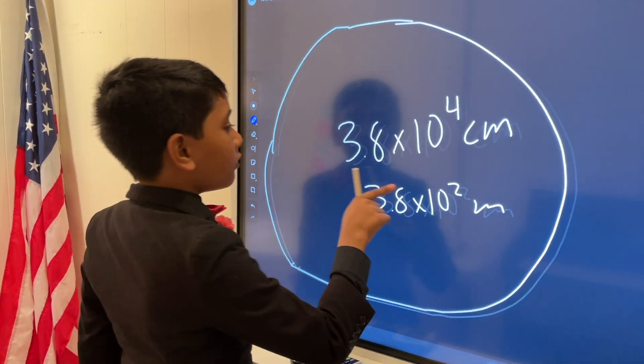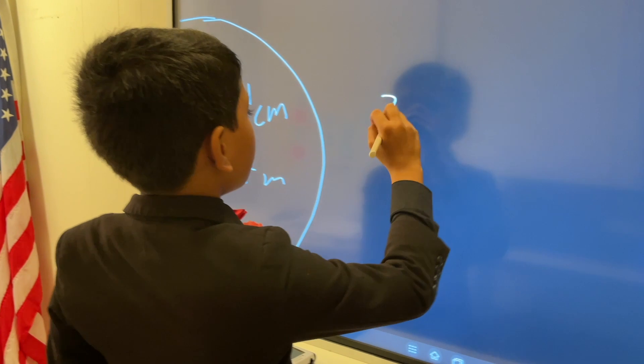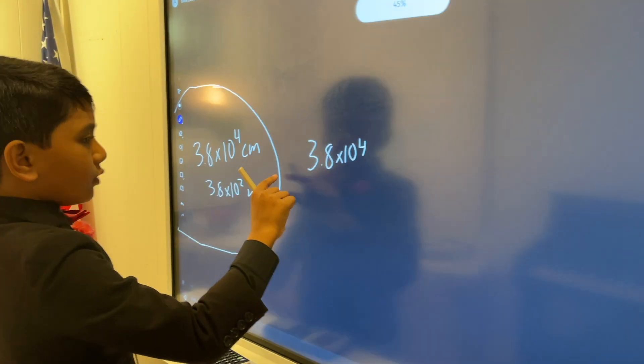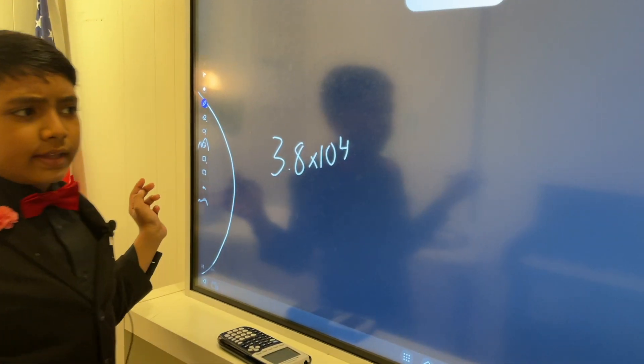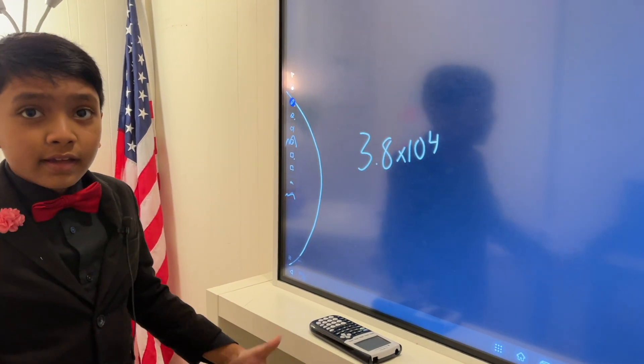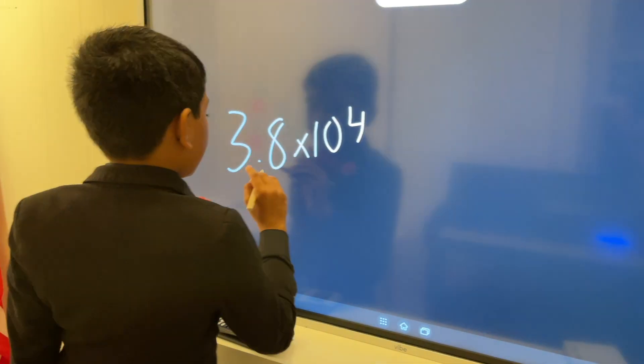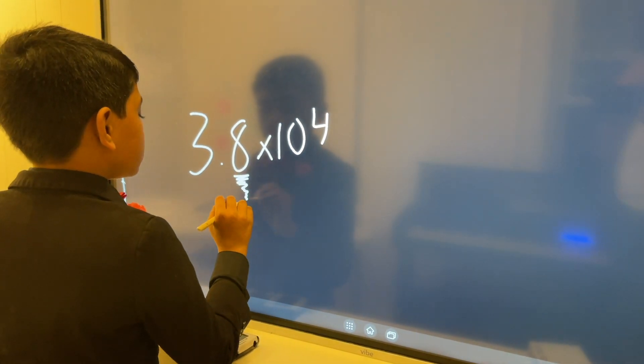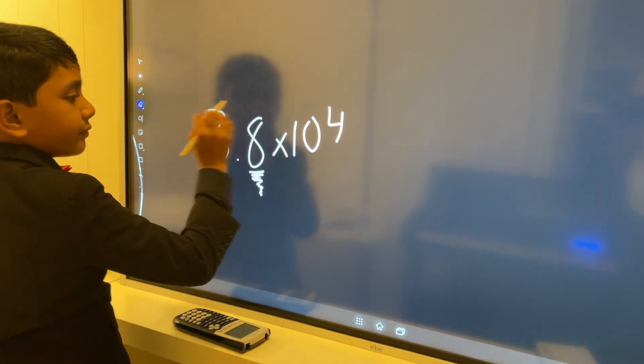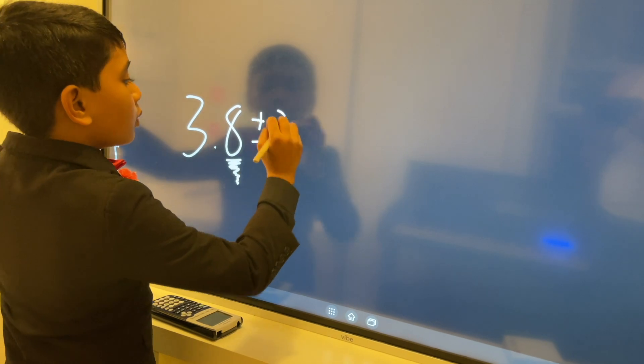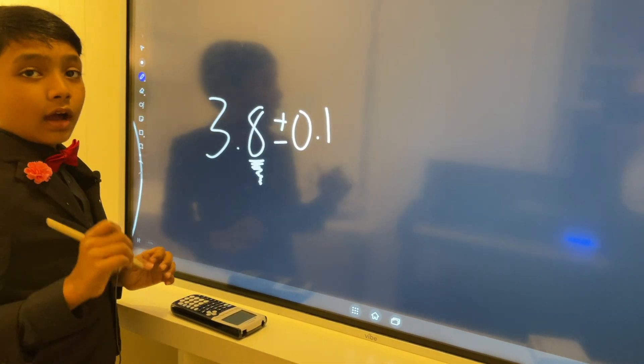So now, you take this, and you will have an uncertainty here. What is the uncertainty? Well, the thing is, the last digit is most likely always uncertain. So, let's say it's uncertain by plus minus 0.1.